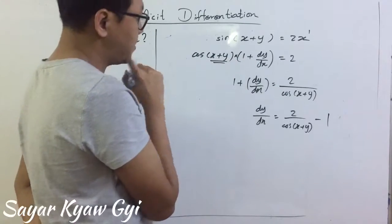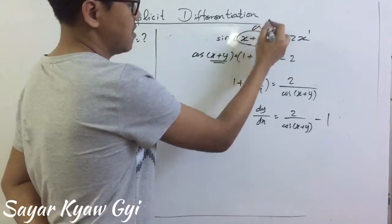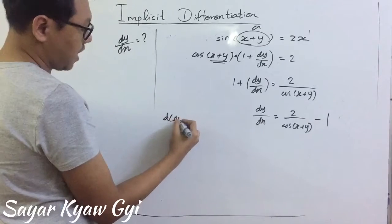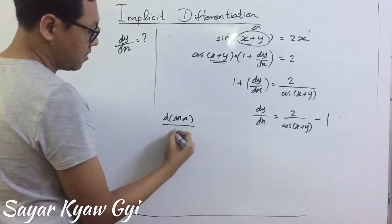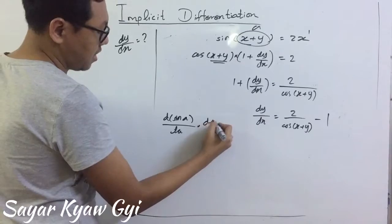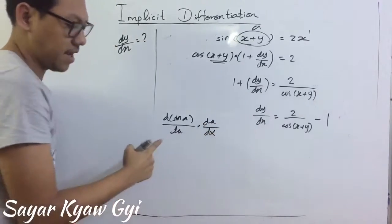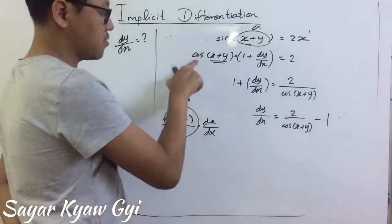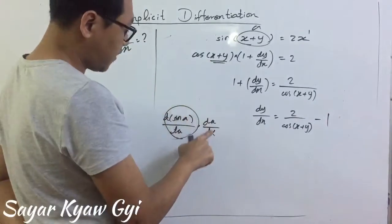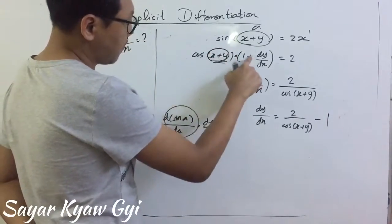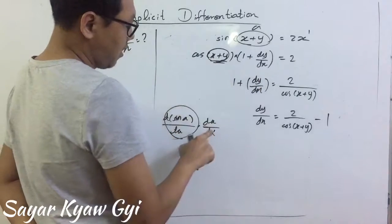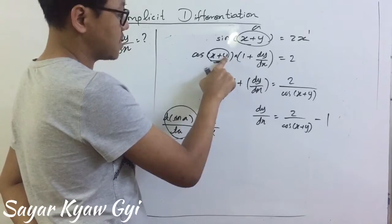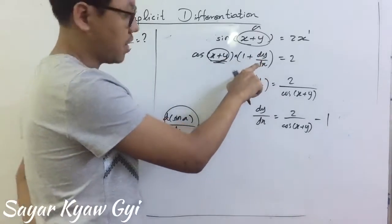Let's say x plus y would be 'a'. So we do differentiation of sine a with respect to a, and then da by dx — that's the chain rule. So, sine becomes cosine on the outside, then we differentiate a: when you differentiate x, you get 1, and when you differentiate y, you get dy by dx. Then you switch it.